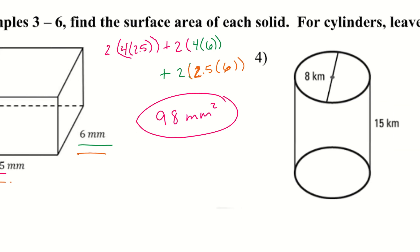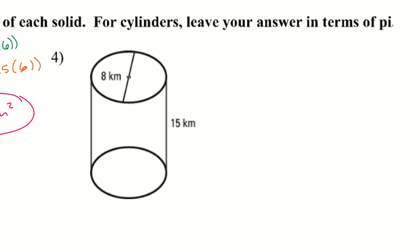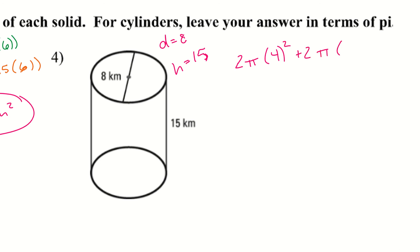Let's check out the cylinder. It gives us a diameter of 8 and a height of 15. Let's write out our equation: SA = 2πr² + 2πrh. Since the diameter is 8, the radius is 4. So we have 2π(4²) + 2π(4)(15). It does want us to leave it in terms of pi, so we'll solve each side individually.